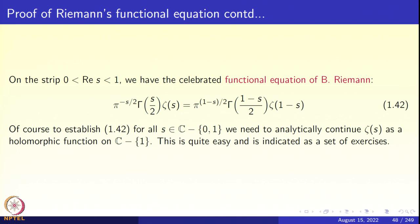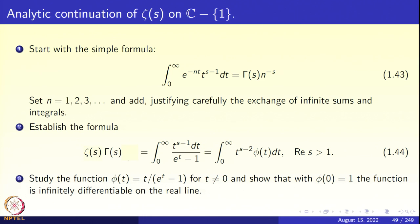I shall indicate in a series of exercises how to do the analytic continuation of the zeta function on the complex plane punctured at 1. We start with a very simple observation — a Laplace transform or gamma function formula: integral from 0 to infinity of e^{-nt} t^{s-1} dt equals Γ(s) · n^{-s}, equation 1.43.